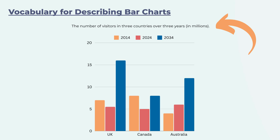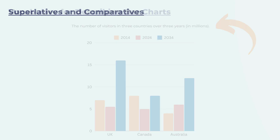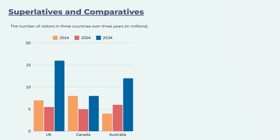As I always say to my students, it's important to take a look at the data first to really get an overview and ensure you understand generally what you're looking at. Once we've done that, let's jump into our lesson. Remember, we're describing and comparing, so to do that we'll use superlatives and comparatives.